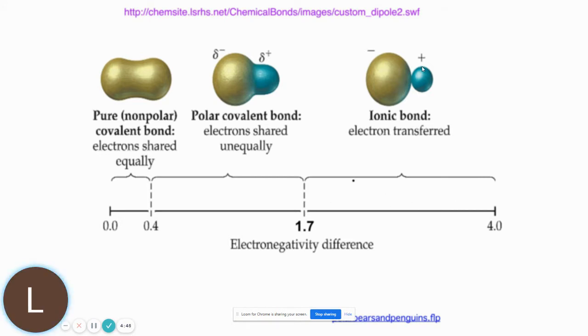And then the ionic bond, where electrons are actually transferred. There is no sharing of electrons. When the electron is transferred, it gets a positive and negative charge, which tightly holds the atoms together. Again, they're not actually sharing electrons.